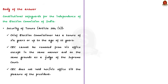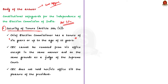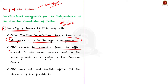Coming to the body of the answer, first we have to write about the constitutional safeguards that ensure the independence of ECI. The Election Commission of India is a constitutional body established under Article 324 of the constitution. To ensure independence, this article contains the following provisions. Firstly, the tenure of the CEC is secured — the Chief Election Commissioner and other commissioners have a tenure of 6 years or up to the age of 65, whichever is earlier. In addition, the CEC cannot be removed from office except in the same manner and on the same grounds as a judge of the Supreme Court. The CEC can be removed by the President based on a resolution passed in Parliament.